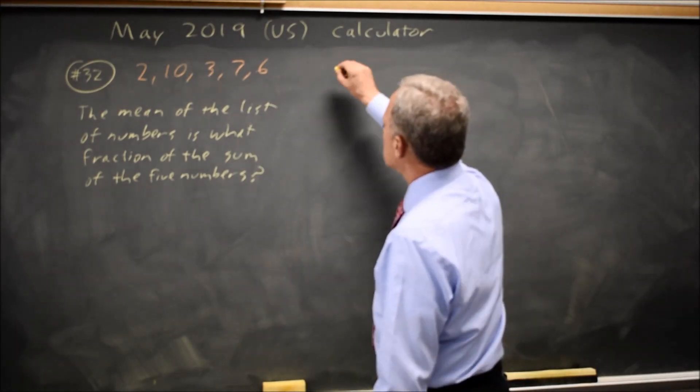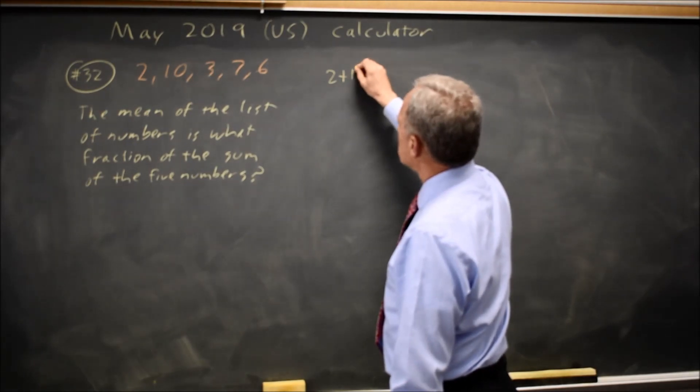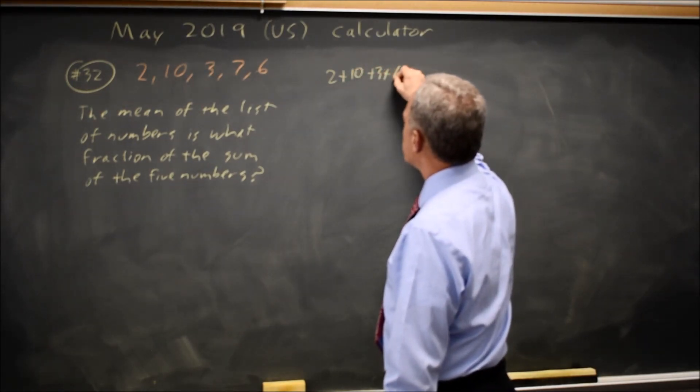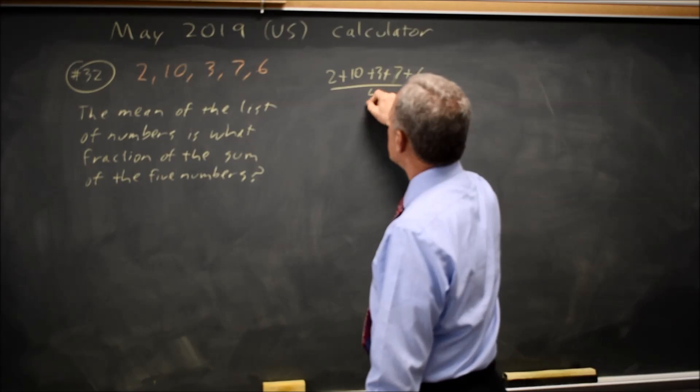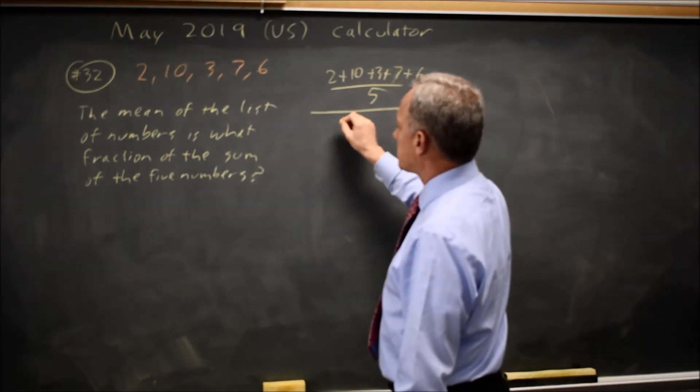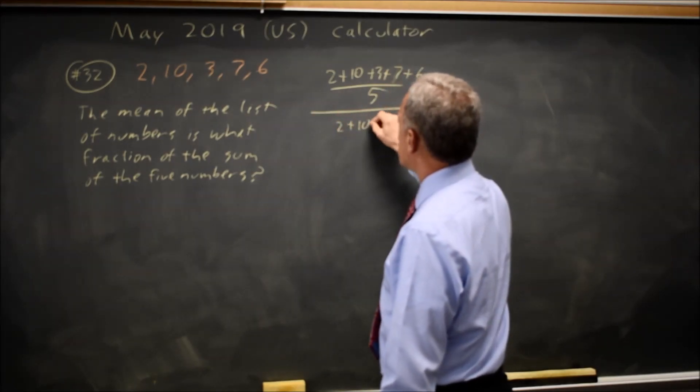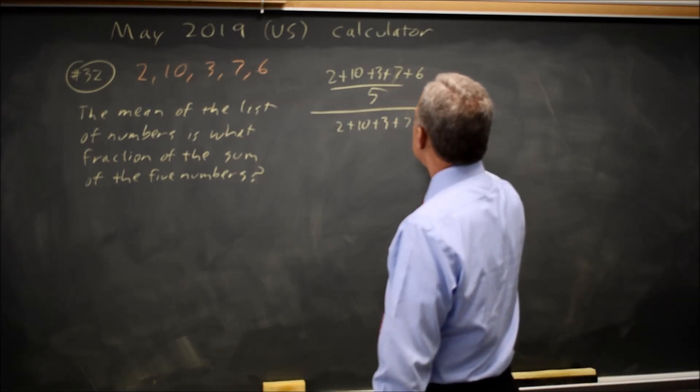You could find the mean 2 plus 10 plus 3 plus 7 plus 6 over 5 and then divide that by the sum, 2 plus 10 plus 3 plus 7 plus 6.